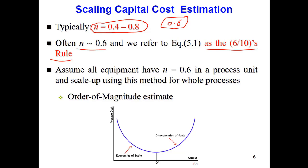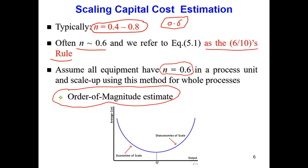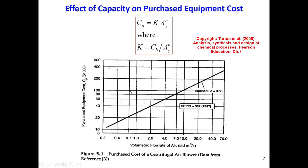Most of the time we assume 0.6 for all equipment when we are going to estimate the cost. And don't forget that when we use this equation it is just an order-of-magnitude estimate — it is not very accurate. I'll show you one example of how cost and capacity are related.